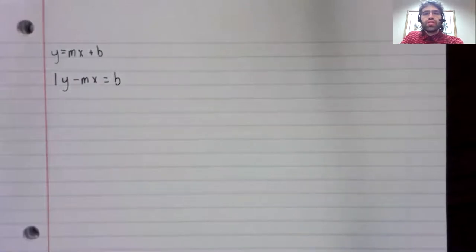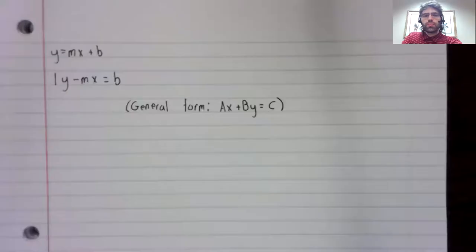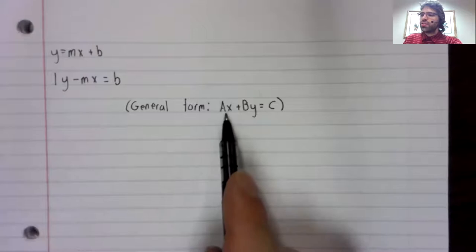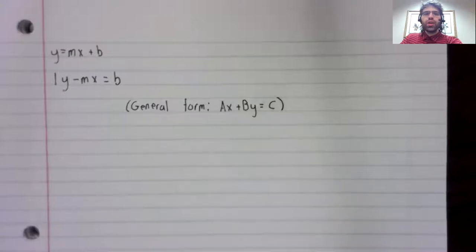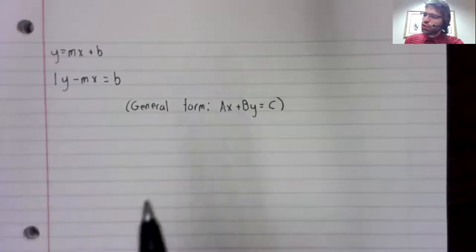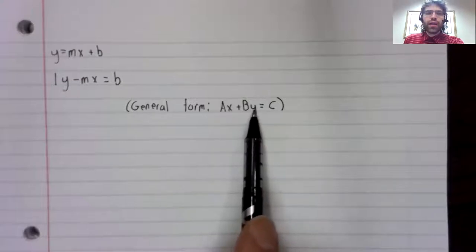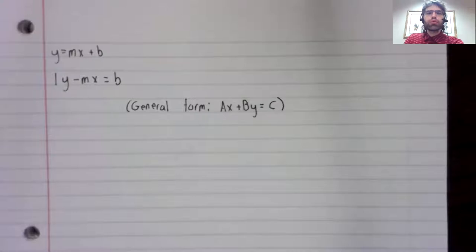This is an example of a linear equation in the general form. In general, we learn in algebra that the general form of a linear equation is a times x plus b times y equals c. Note that when you have a linear equation in the general form, it's not clear that we have a dependent and independent variable. This x and this y seem to be playing the same roles.